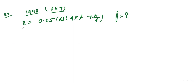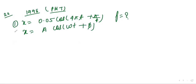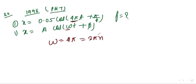Compare with the standard equation x = A cos(ωt + φ). Comparing equations 1 and 2, ω = 4π. Using the relation ω = 2πn, we cancel π and get frequency n = 2 hertz.